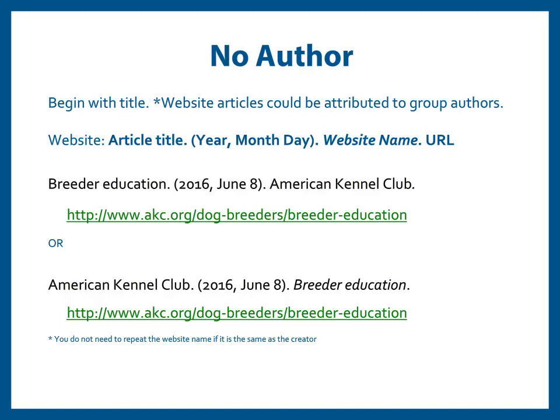If you cannot identify a specific author for your article, list the article title first before the year, and then follow with the website name. When doing so, do not italicize the article title. You can also use the name of the website in place of the author when appropriate — for example, a government website or professional organization likely responsible for all website content. When following this format, do not repeat the website name after the date. Be mindful that whatever element is listed first should be used in your in-text citation — either the article title or the website name.